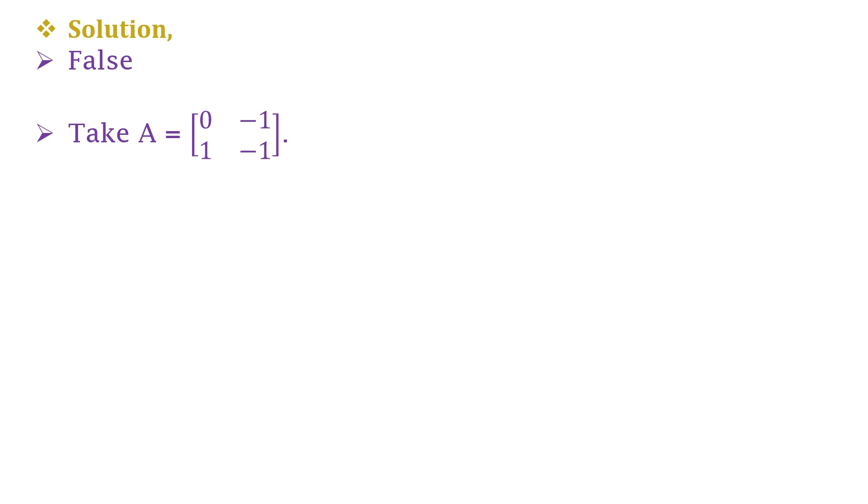1 and -1. Here you can get A² equals a 2×2 matrix with entries -1, 1, -1 and 0.